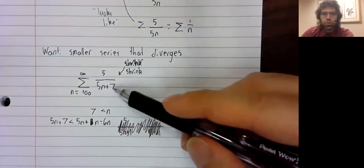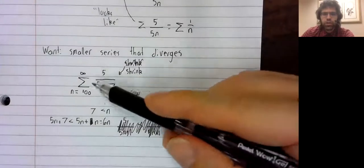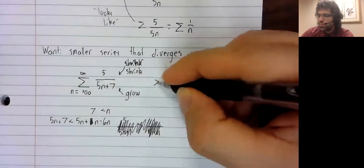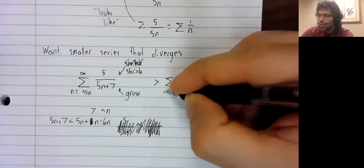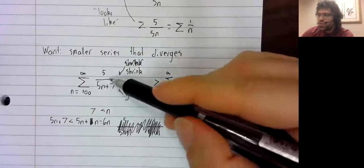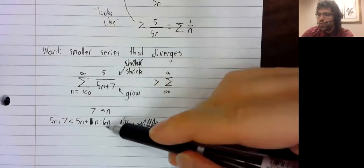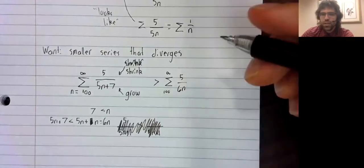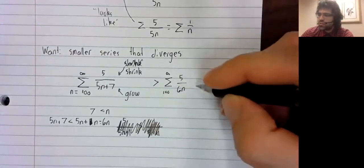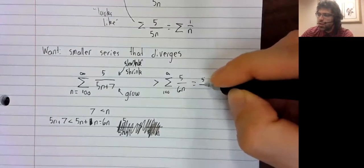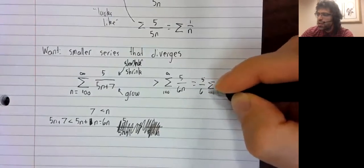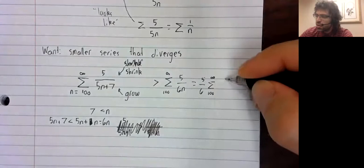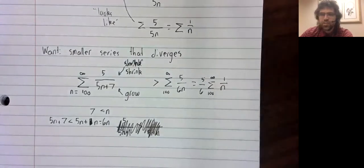So to grow the denominator and shrink the series, I'll replace this denominator with a 6n. Now this 5 and this 6 are constants. They pull out of infinite sums, just like they do finite sums.